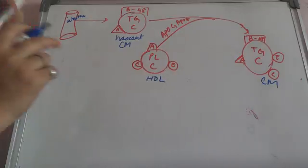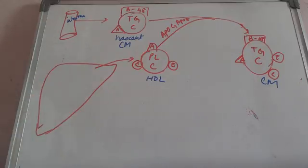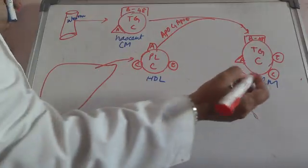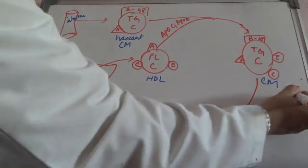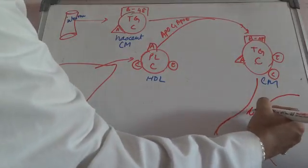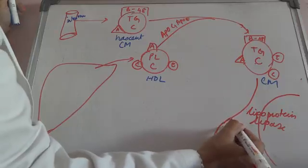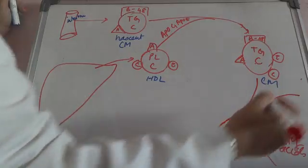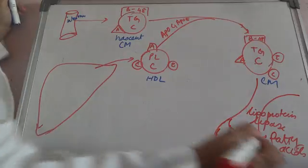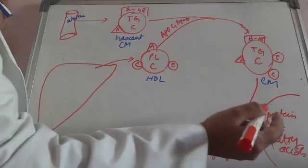HDL comes from the liver. The full chylomicron — containing cholesterol and triglyceride — passes through the tissues, which contain lipoprotein lipase. Lipoprotein lipase acts on the triacylglycerol, breaking it down into fatty acids and glycerol. The fatty acids enter the tissues, and glycerol remains.